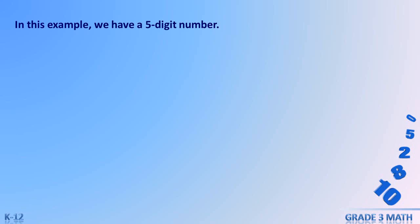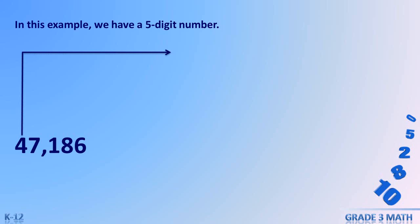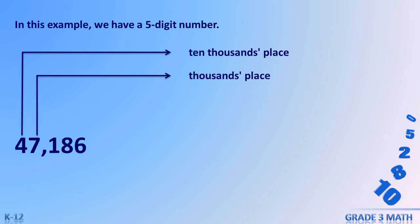In this example, we have a five-digit number: 47186. The first digit is the ten-thousands place — it tells you how many sets of 10,000 are in the number. The number 47186 has four ten-thousands. The second digit is the thousands place; there are seven sets of 1000.